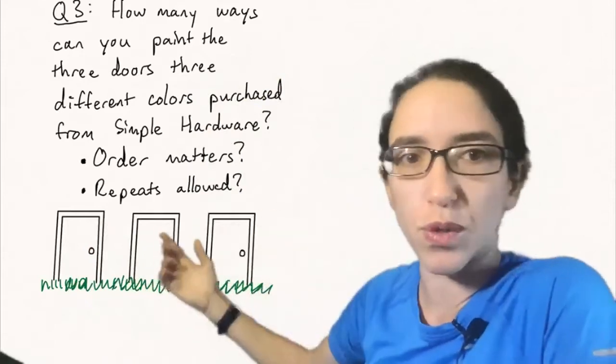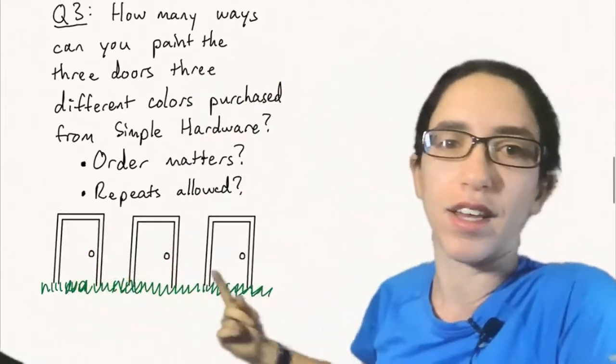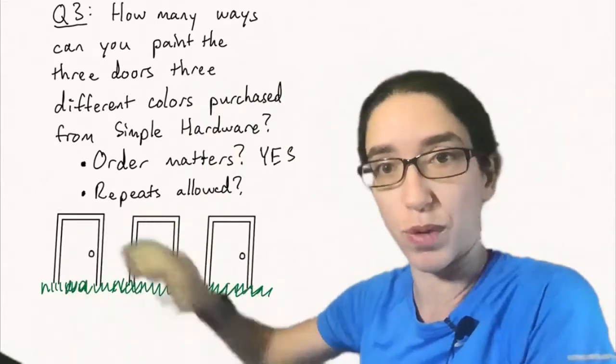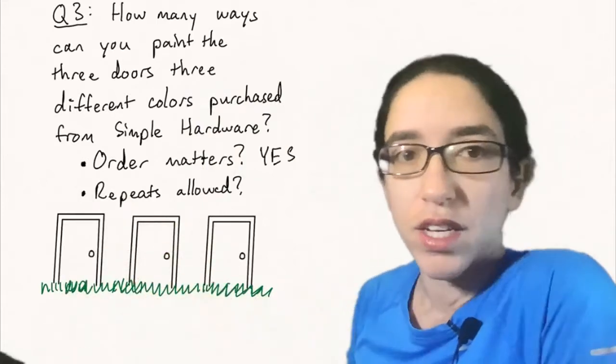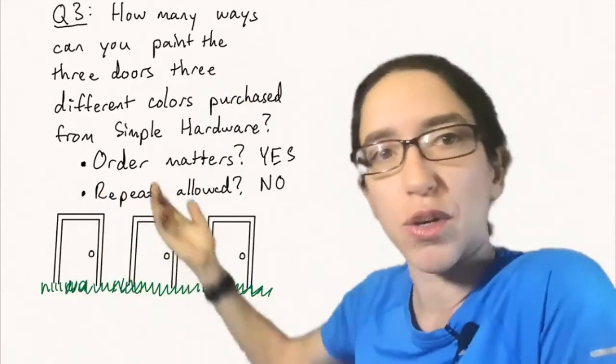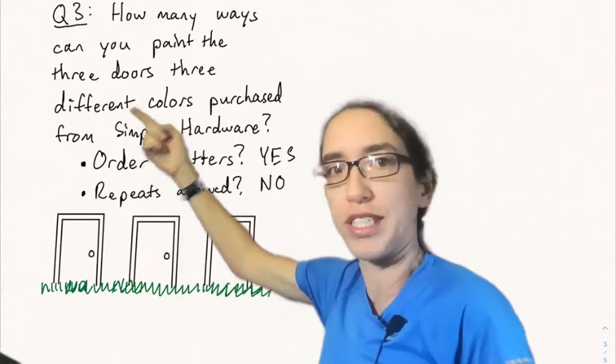So that means that order actually matters here in the way I'm choosing the paint. I'm not just buying three buckets, I'm actually choosing which one I'm painting on which door. So the order matters in choosing the three colors and repeats are not allowed because it says in the problem there's three different colors.